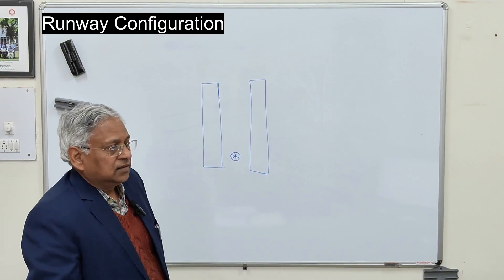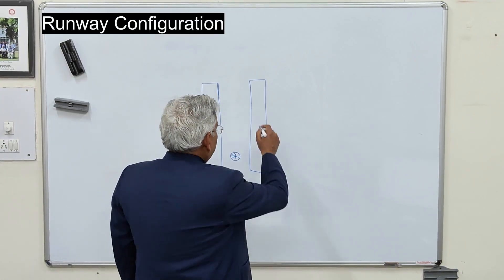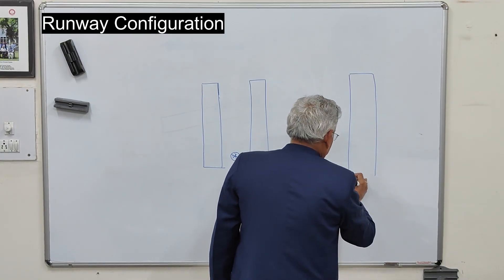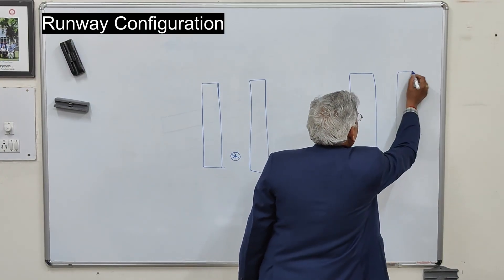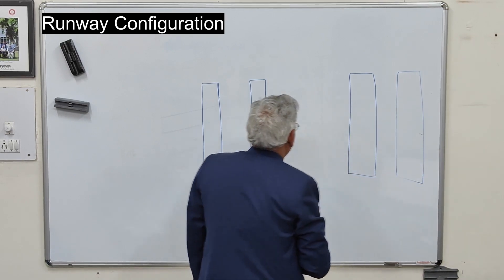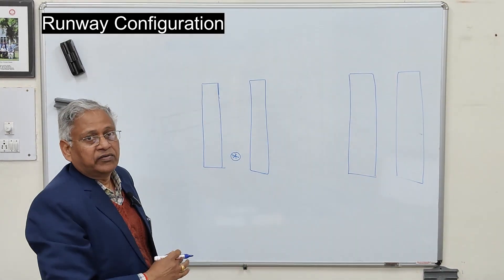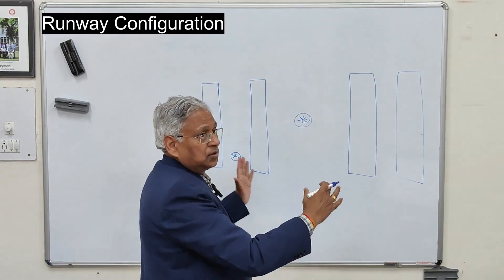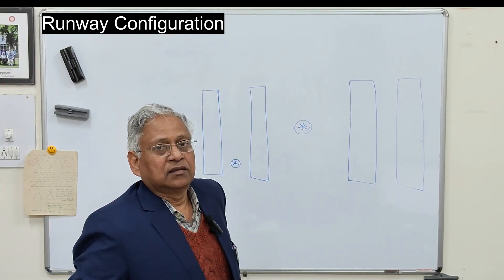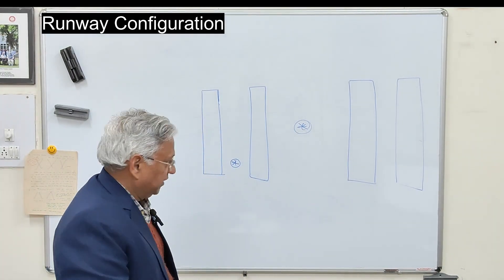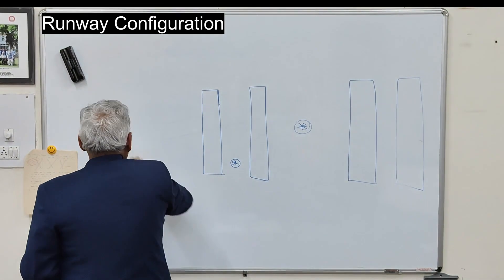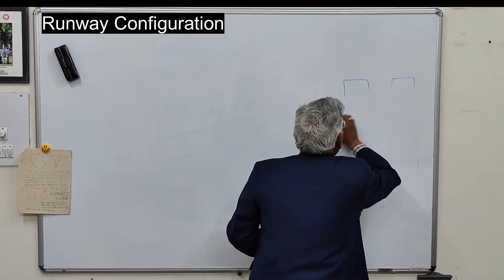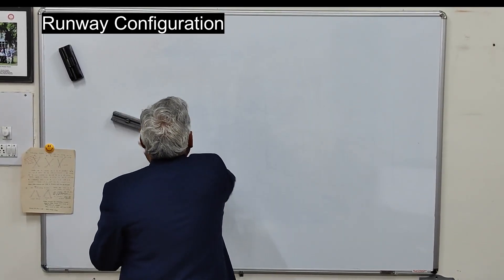When there are four parallel runways, each pair is spaced close and the two pairs are kept far away from each other. The terminal building is kept between these two pairs. The third configuration is intersecting runways, which are provided when a single runway does not provide enough wind coverage.